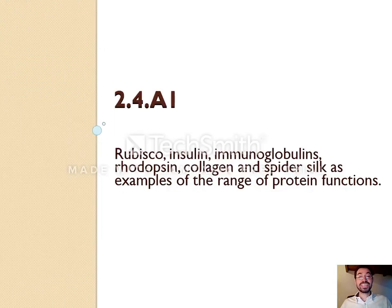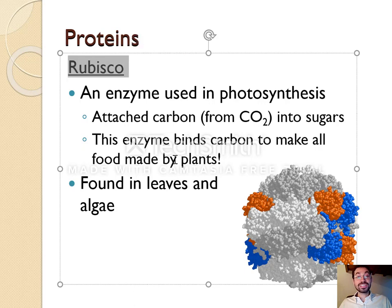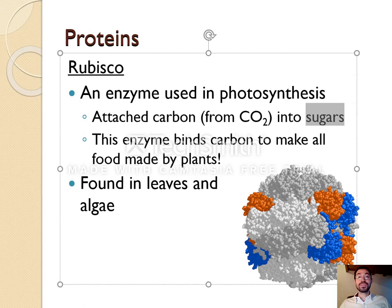There are actually six proteins you are required to know the functions of: rubisco, insulin, immunoglobulins, rhodopsin, collagen, and spider silk — as examples of the range of protein functions. Rubisco is an enzyme that does photosynthesis. It's short for ribulose bisphosphate carboxylase — you do not need to know that. The reason I love rubisco is that it actually takes CO₂ from the air — literally the carbon dioxide I exhale — and turns it into food, sugar. This is how plants make food from thin air. So you find rubisco in plants for photosynthesis.